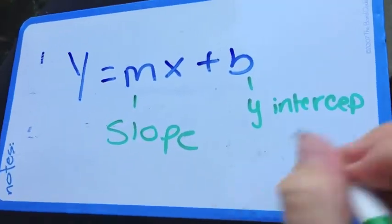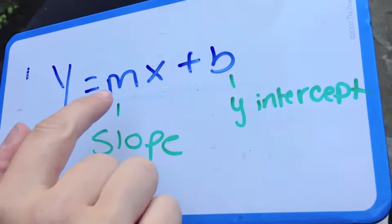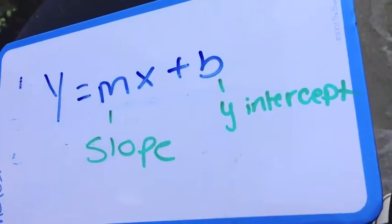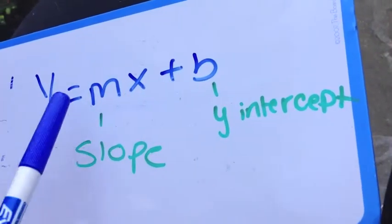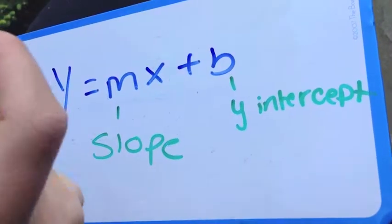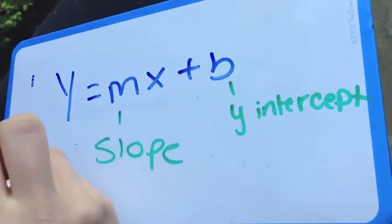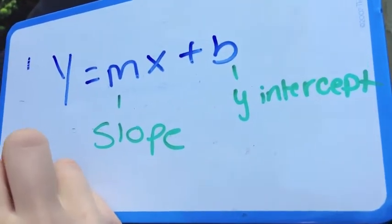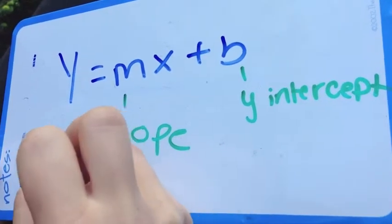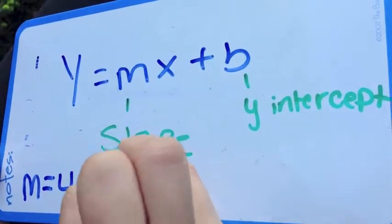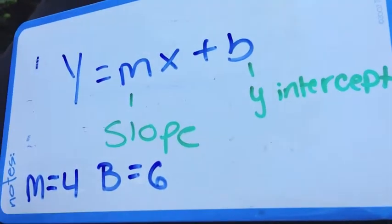In this case, I'm going to give you a problem where I give you the letter m and the letter b. And that way you can find out what y equals. In this case, m will equal 4 and b will equal 6. Keep that in mind, we'll need that later.